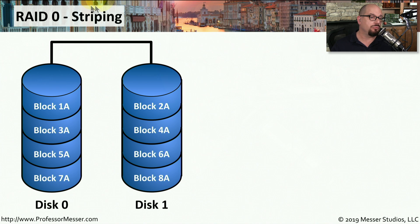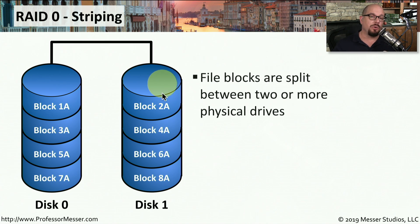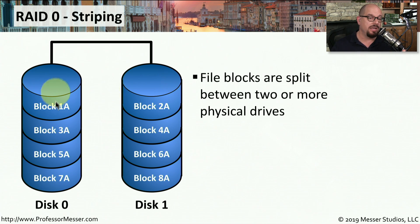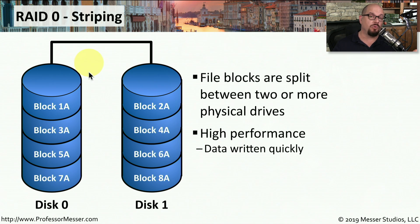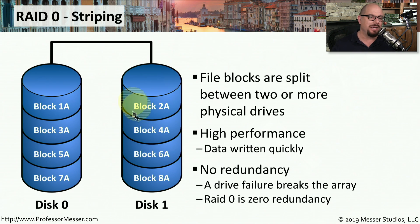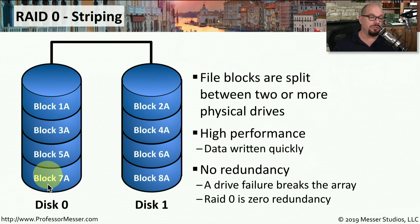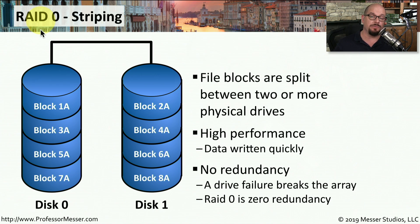The first RAID format is RAID 0, or striping. Striping means we split a file between two or more different drives — one block on the first disk, another block on another disk, alternating until the entire file is spread across both drives. This theoretically gives higher performance because we can write to multiple drives simultaneously. But if one of these drives fails, we have no access to any of these files — there is no redundancy with RAID 0. If you have a single drive failure, you lose access to all of your data. One easy way to remember this is that RAID 0 means zero redundancy.